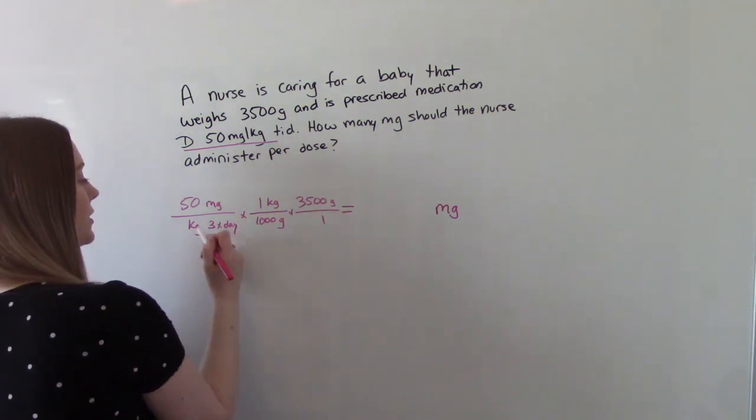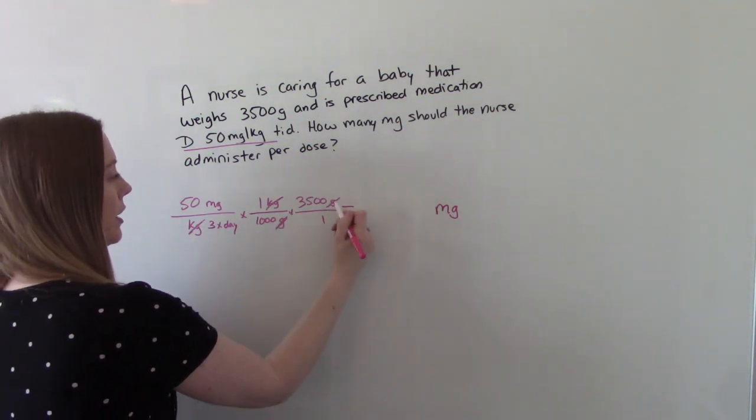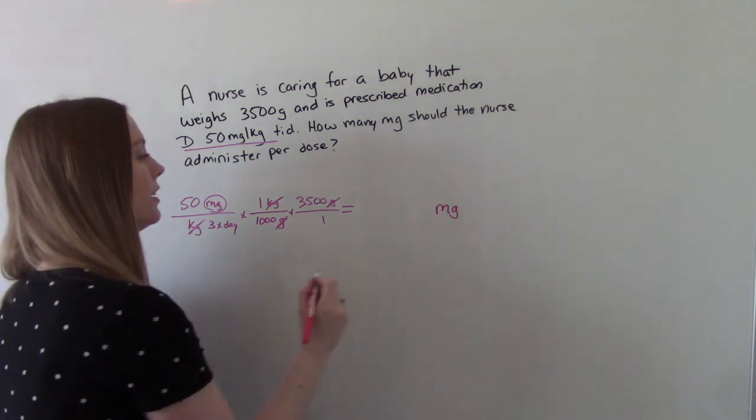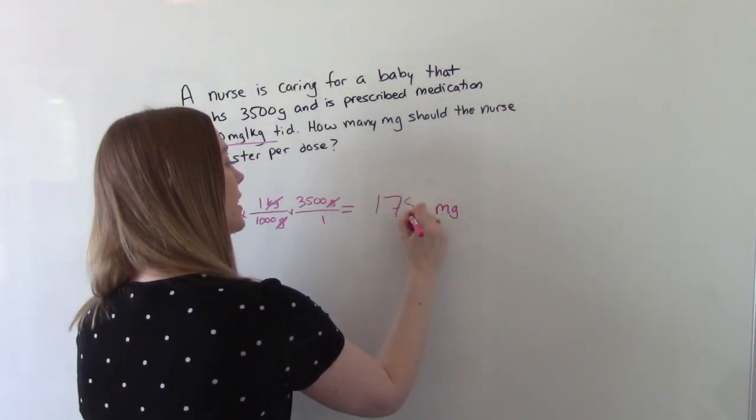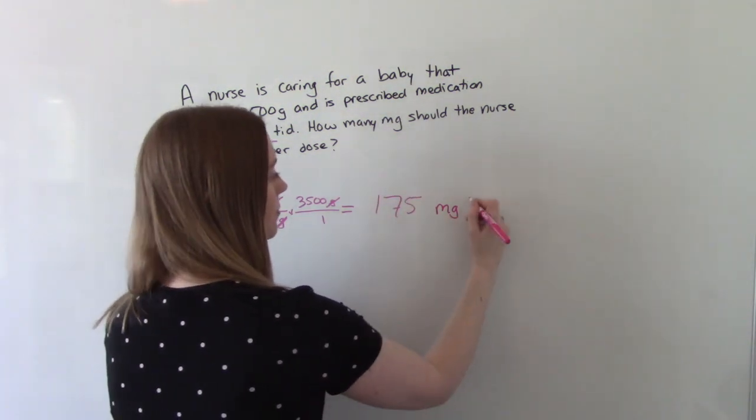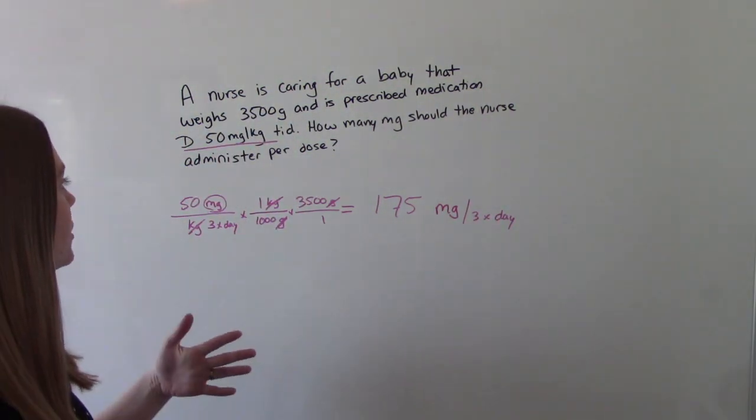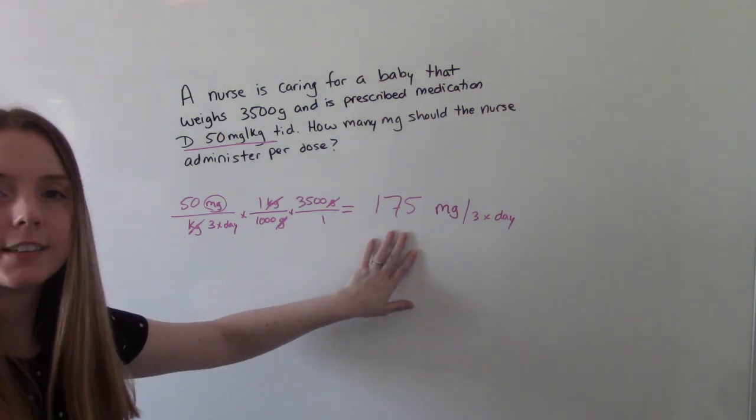So now we can cancel stuff. So cancel our kilograms, cancel our grams, we'll end up with milligrams in our answer, and we'll get 175 mg three times a day. So how many milligrams should the nurse administer? 175.